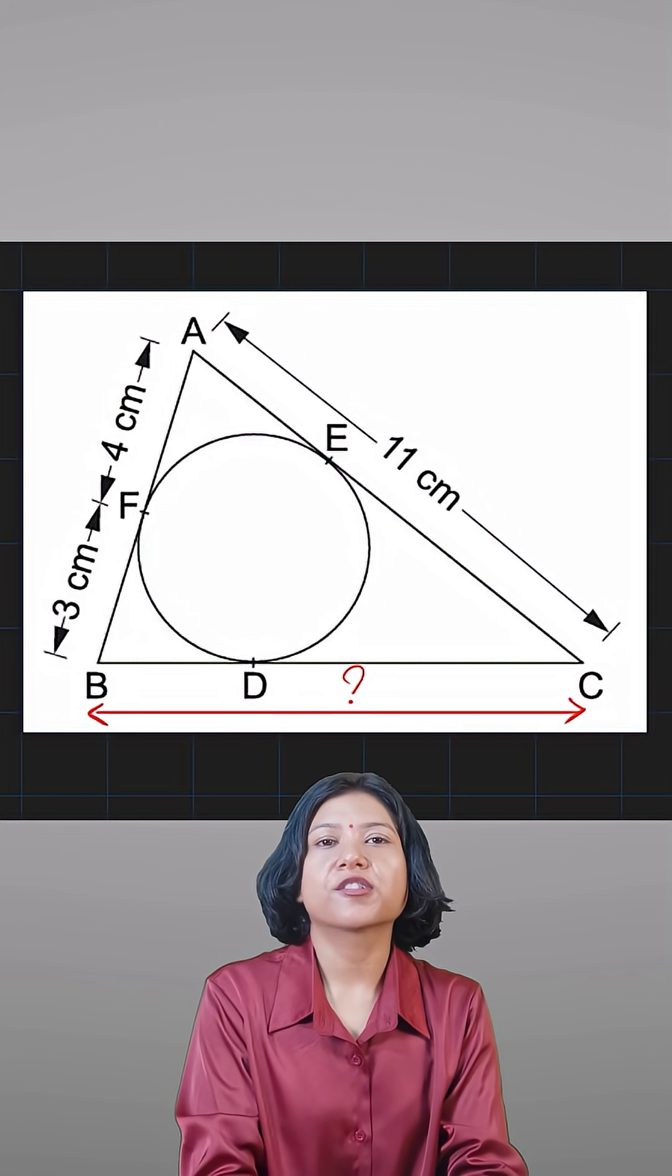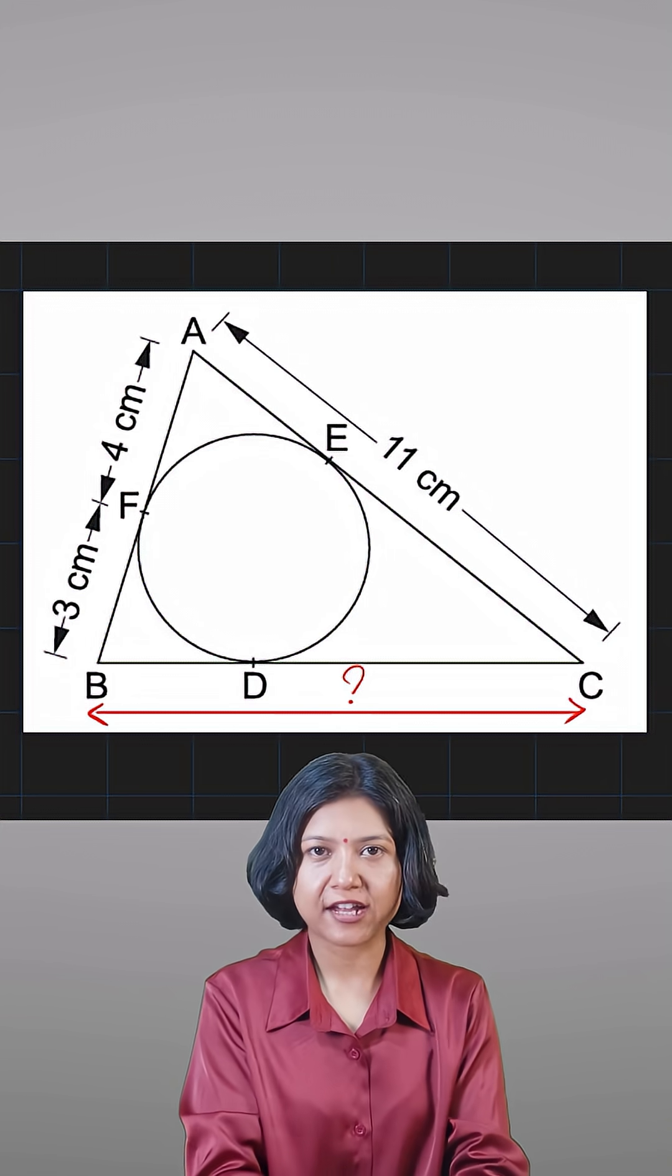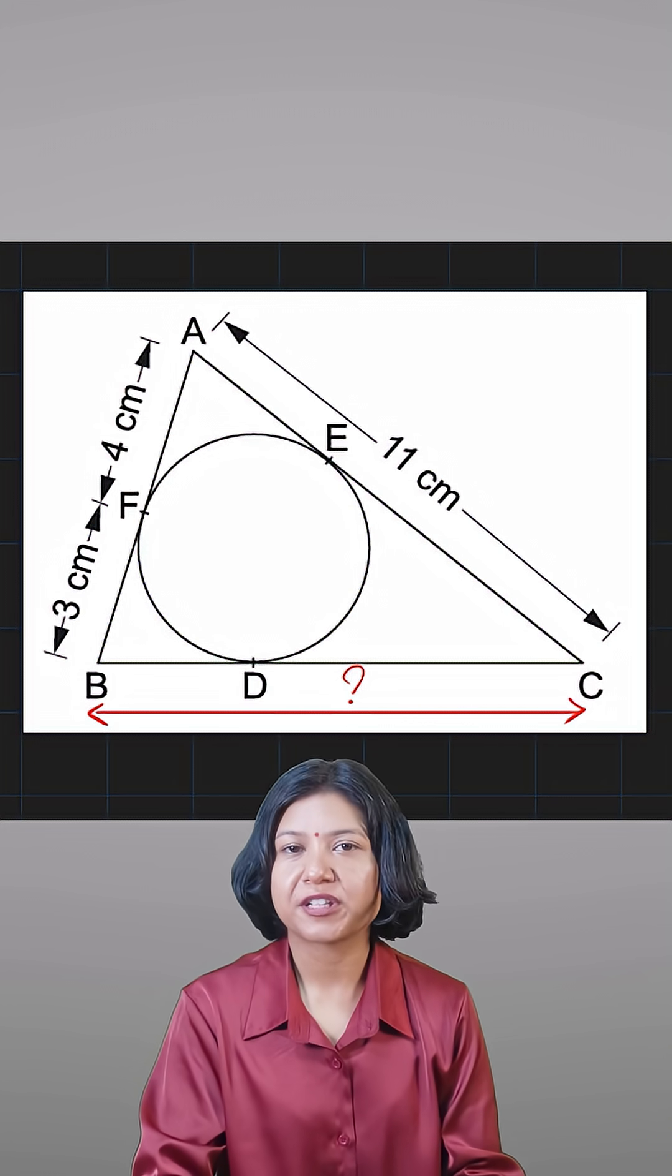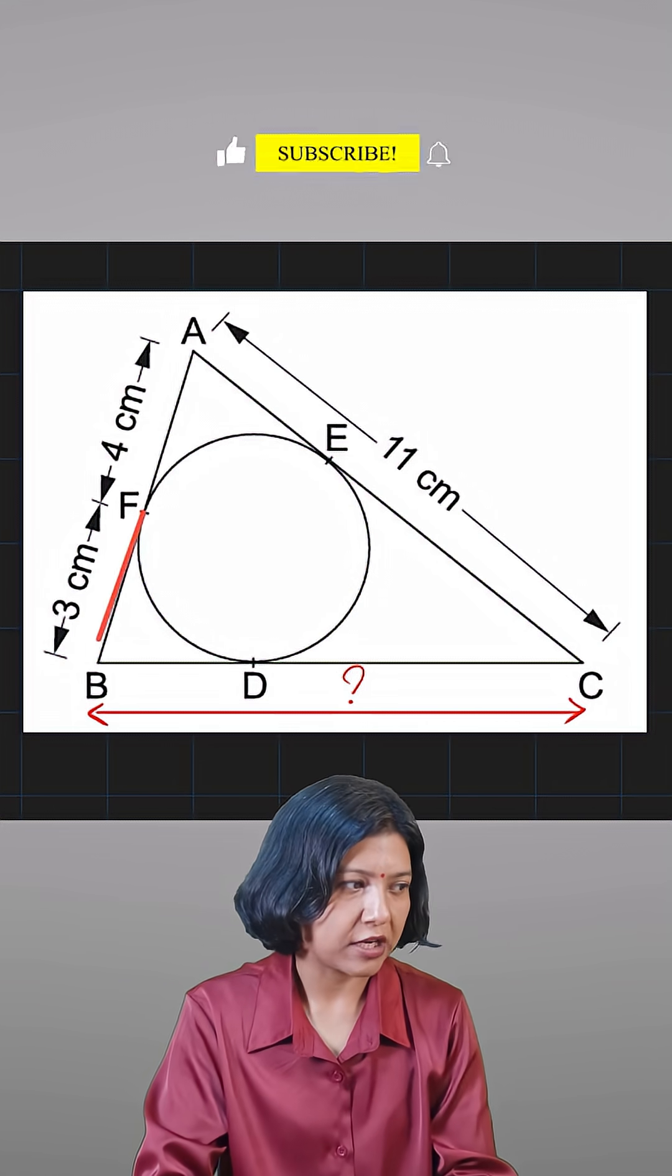You have a circle inscribed in a triangle such that all three sides of the triangle are being touched at some point. In this case, there is one property of circles that comes very handy, and that is the tangents coming from an external point.